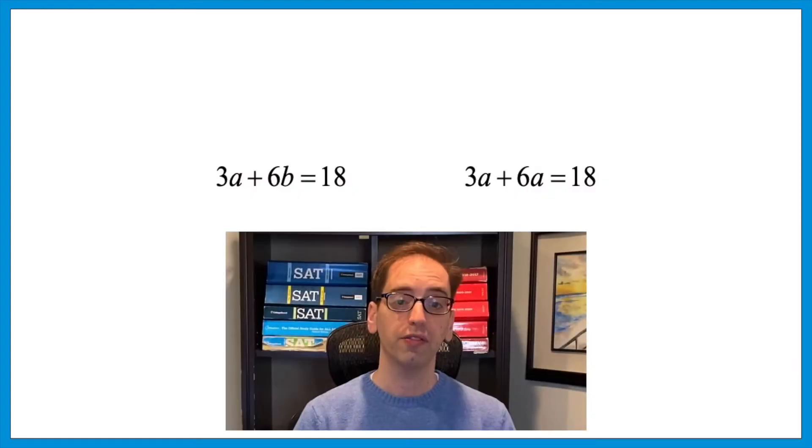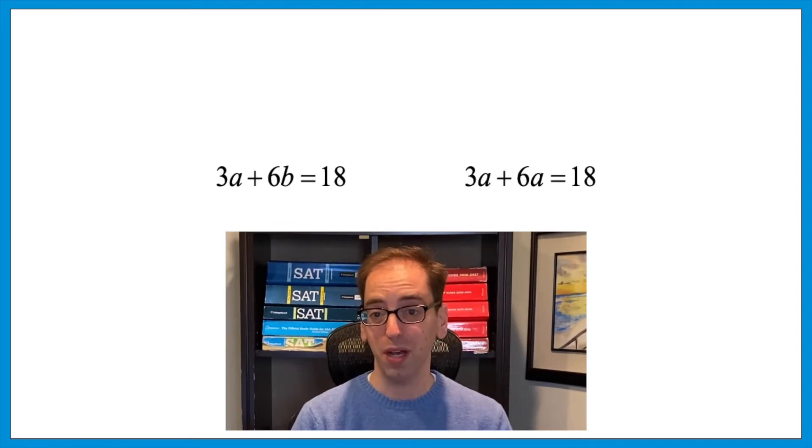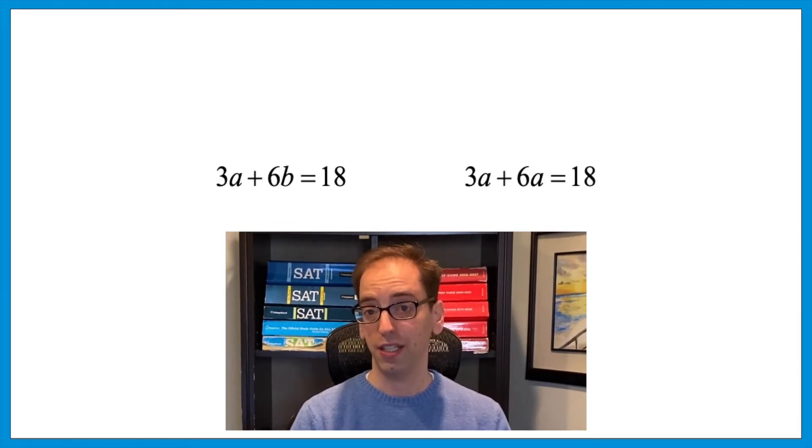Before we start, here's the common thread of every question we're about to see: you can only solve an equation that has one variable. For example, 3a plus 6b equals 18 — you can't solve that because there are two different variables. But 3a plus 6a equals 18 — you can solve that because you have the same variable. We touched on this in a previous video: you always want to take a situation with many variables and rewrite it with just one variable.